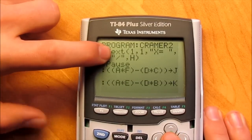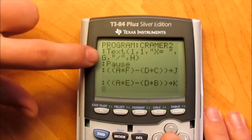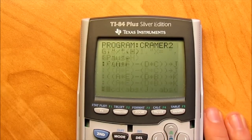Then put text, 1 comma 1, x equals g over h. Pause.